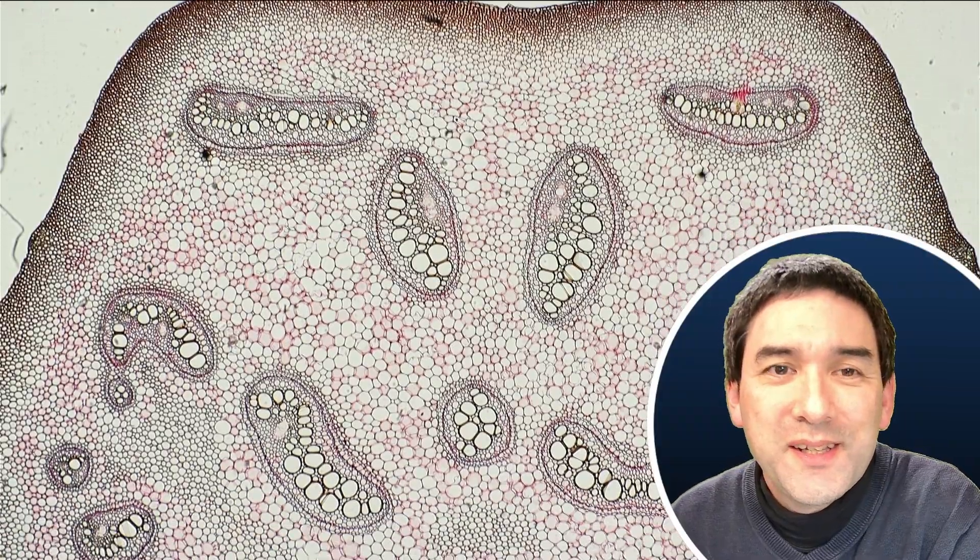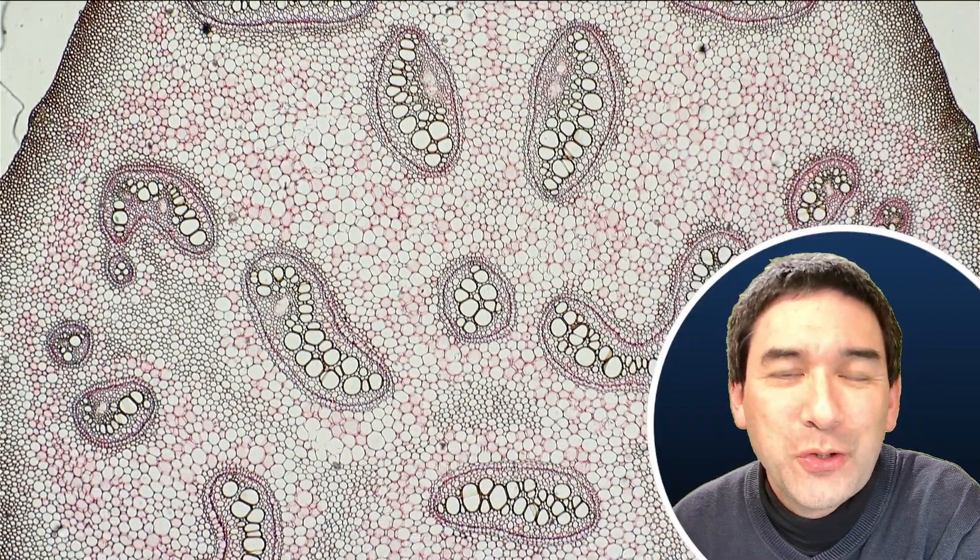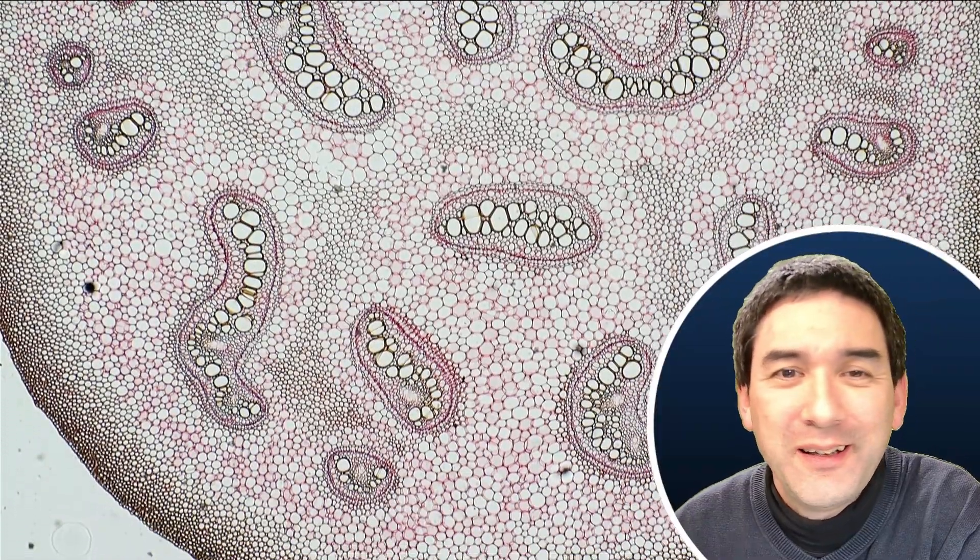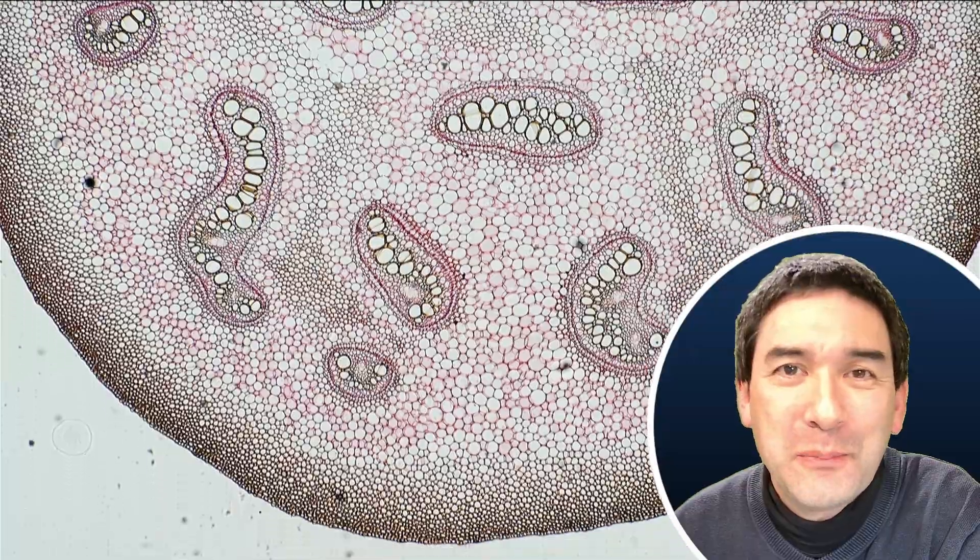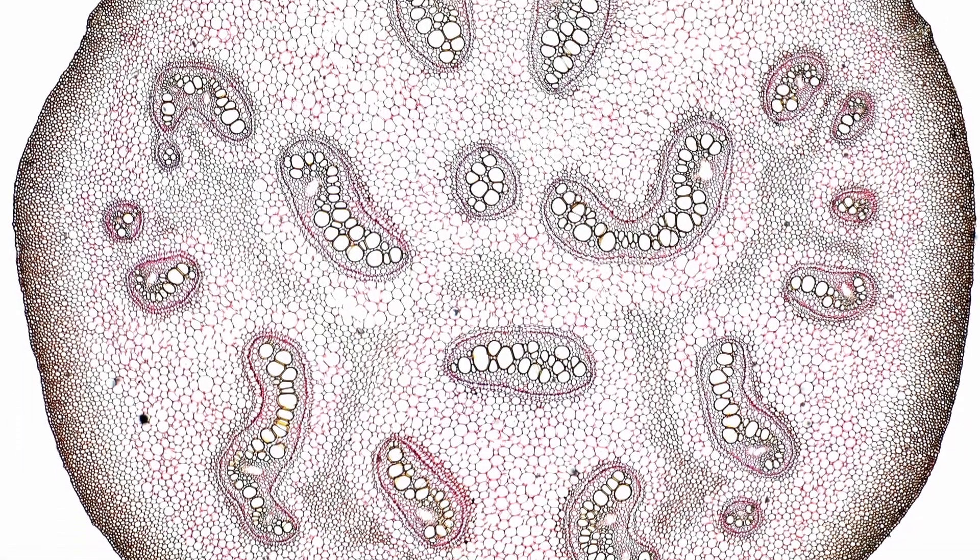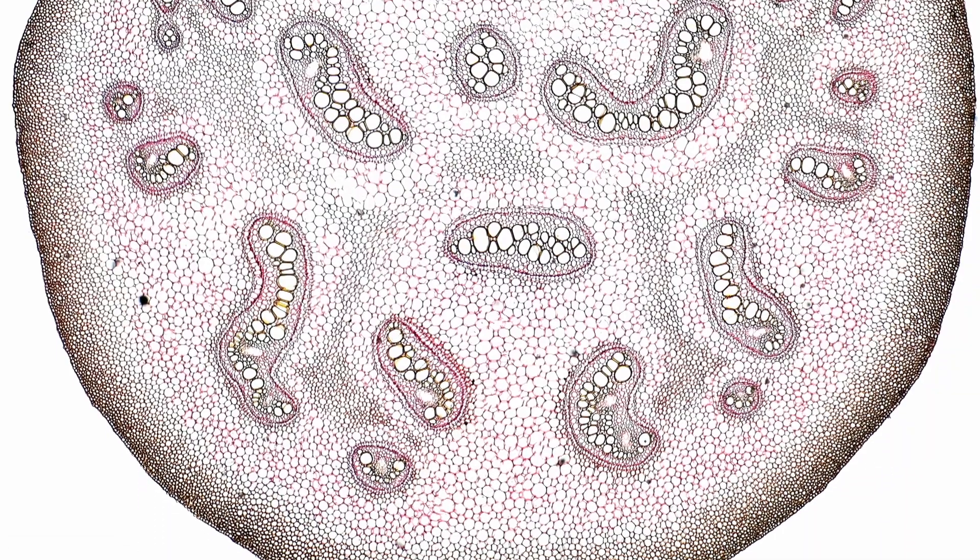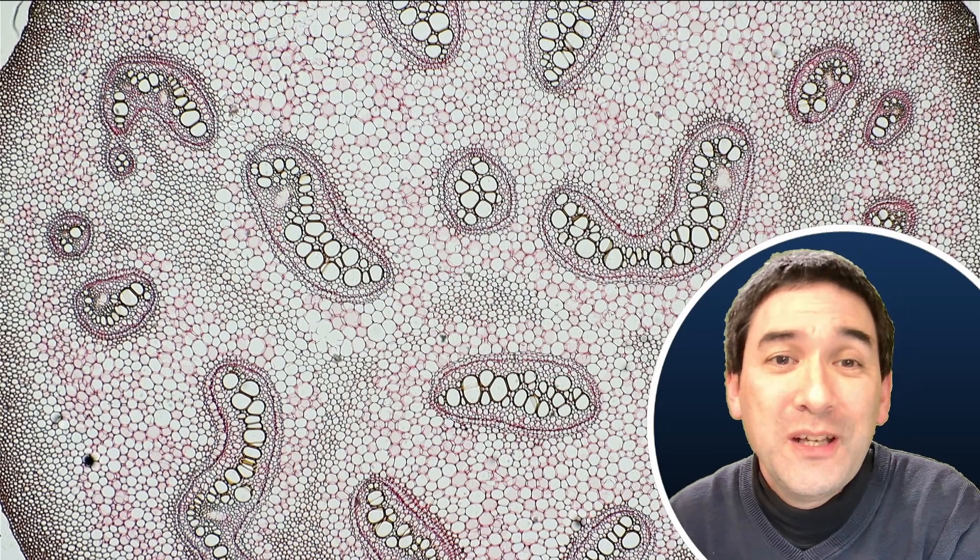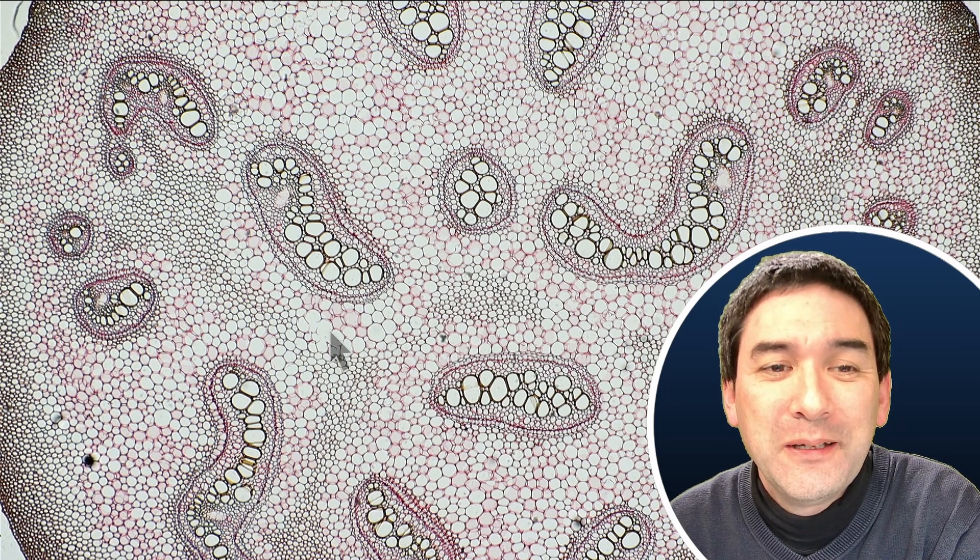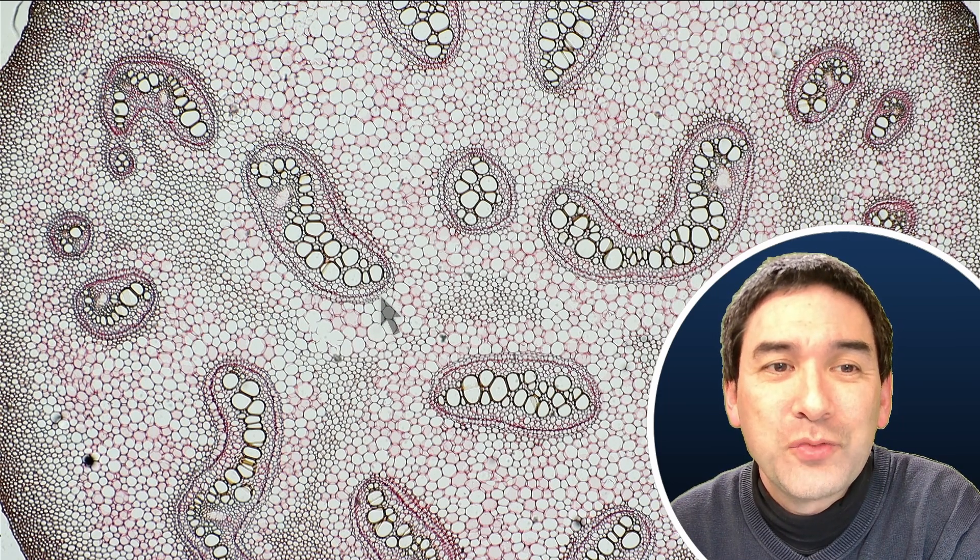So this is how the stem cross section looks like under low magnification using a four times objective. I think plants generally have very pretty specimens under the microscope. And we can see the individual cells. These are the round circular structures. And then, the whole strange irregularly shaped structures that you see here.